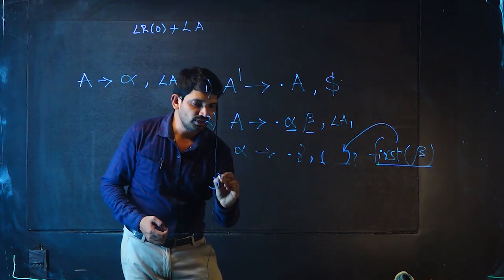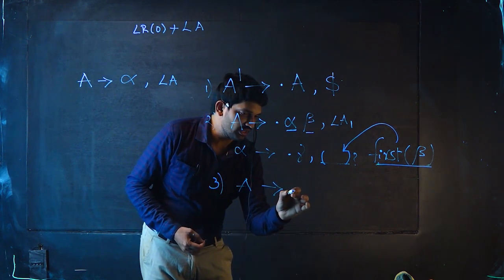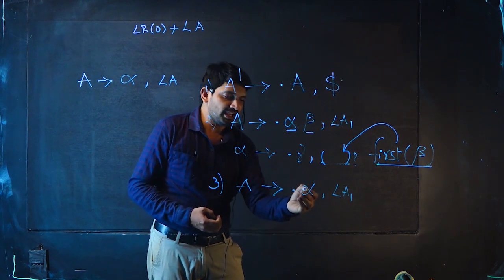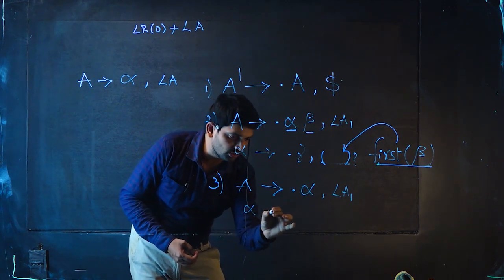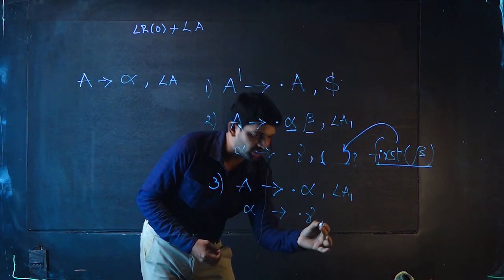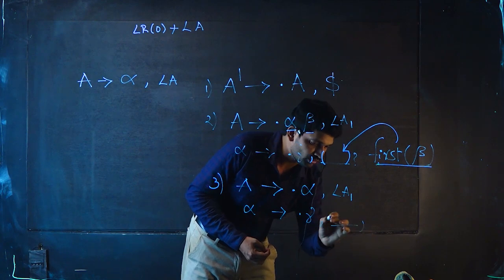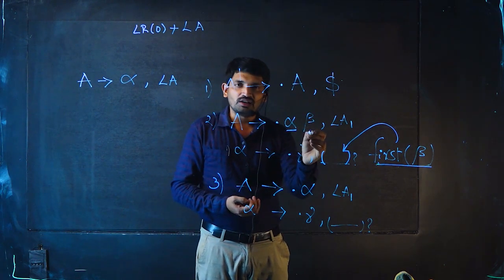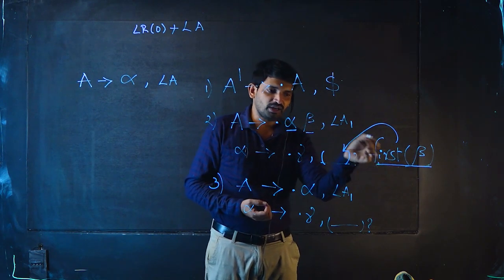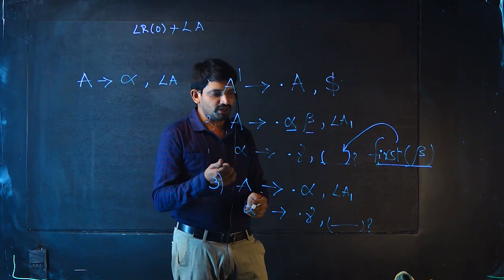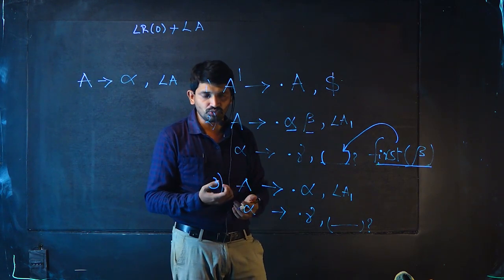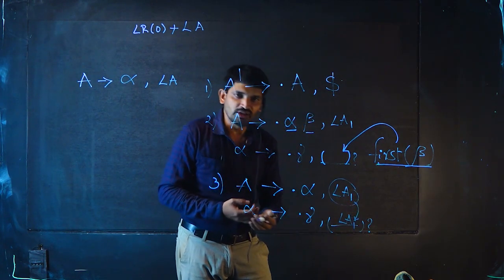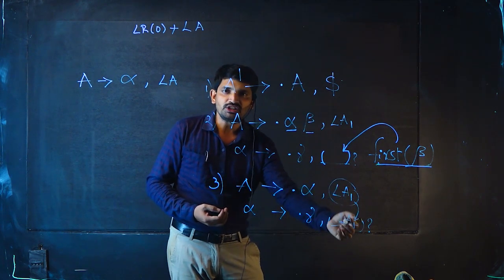The third rule: if A → · α with some lookahead, and α is a non-terminal, we write all α productions as α → · γ. What to write as the lookahead? In rule 2, after α some β is there, so we find FIRST(β) as the lookahead. But here, after α nothing is there — so we simply copy the same lookaheads to this particular production.